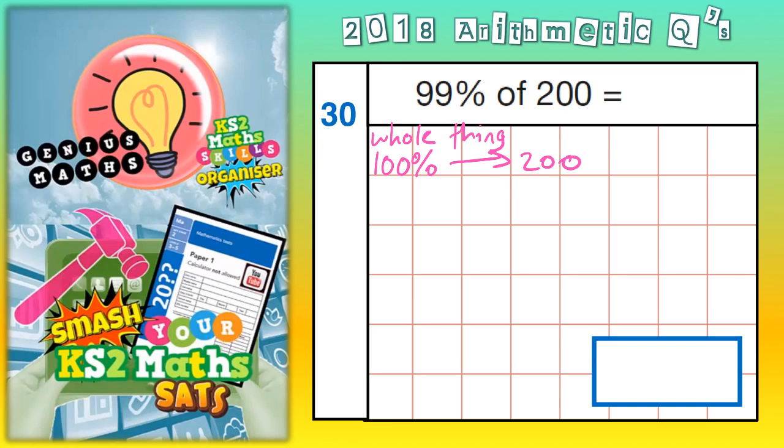Now, the easiest thing to do is find out what 1% is, and then knock that off the 200. So here we go.